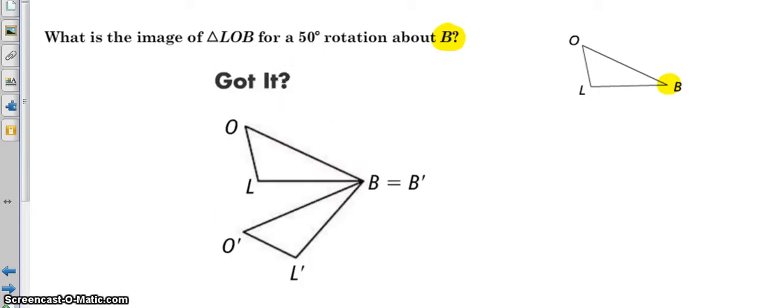We should end up with something like this. If we traveled in the counterclockwise direction, that means that we came this direction, and my B to B prime line should be 50 degrees.